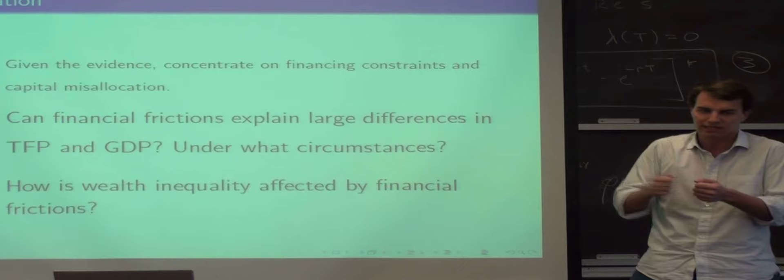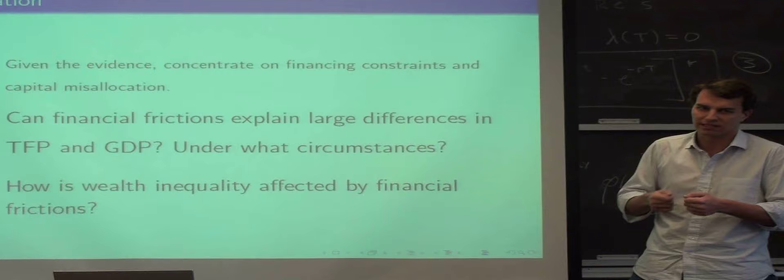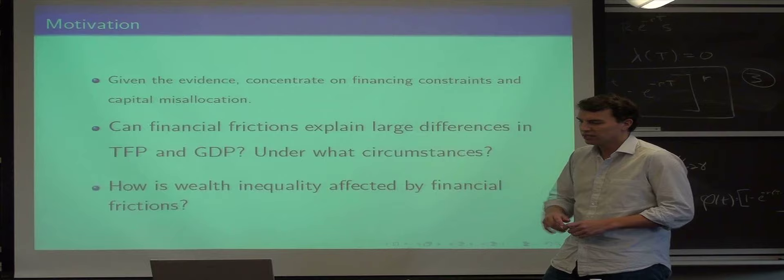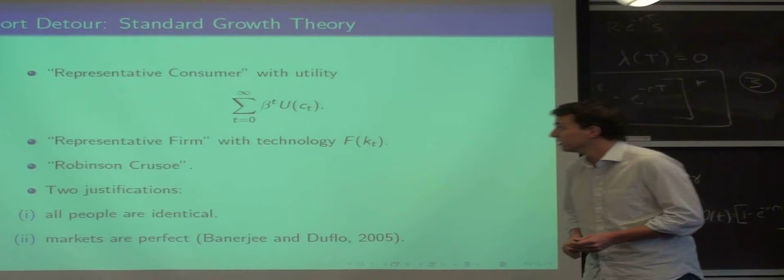You can't really explain differences between countries with the total amount of resources they have. Basically, aggregate resources don't really explain anything. And this is why some people think it's the allocation of resources. Also, you want to see how wealth inequality is affected by financial frictions.